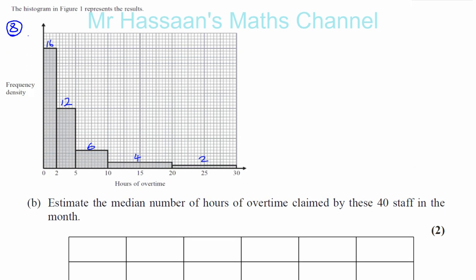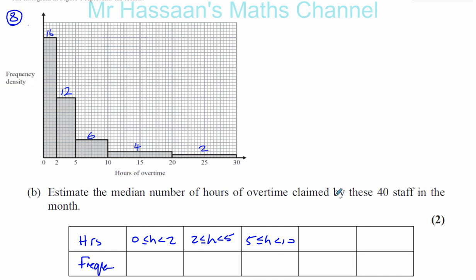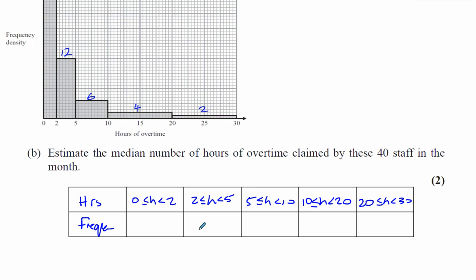What I'm going to do here for part B and part C is make a little frequency table from what we've worked out from the histogram. So we've got the hours of overtime and we've got the frequency. We know that between zero and two hours, then between two and five hours, then between five and ten hours, then between ten and twenty hours, and then between twenty and thirty hours. And we know that in the first bar there's 16 items, 12 items, 6 items, 4 items, and 2 items.